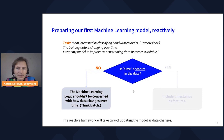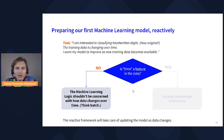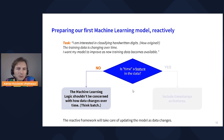Let's take the reactive perspective and see if we can untangle the two issues. We ask ourselves first: is time a feature in the data? Is time a column used by the classifier? Here we're classifying handwritten digits — handwritten digits have nothing to do with time, so the obvious answer is no. This gives us the happy path: it means the machine learning logic we design shouldn't be concerned with how data changes over time. It should just think batch, act as it would in pure batch mode, and let the reactive framework take care of updating the model as data changes.